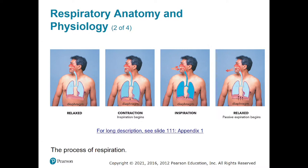Looking at a diagram: at the state of relaxation, our diaphragm is up at the top of its normal resting area. It's inside of the thoracic cavity, protected by the ribs, in a state of rest. As we inhale air, our diaphragm drops down — you can see that in the second picture — our diaphragm is moving downward.